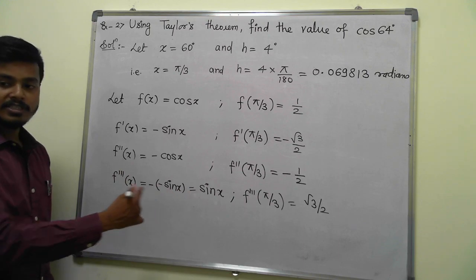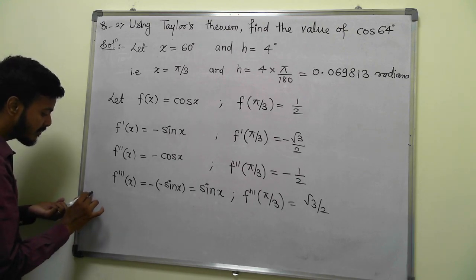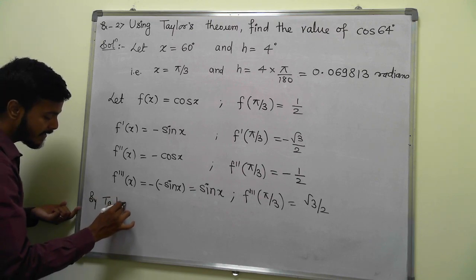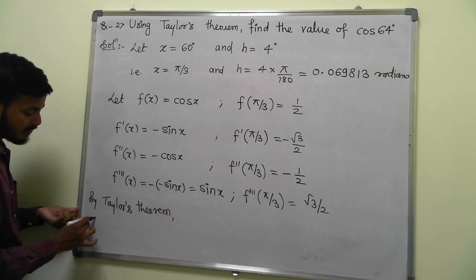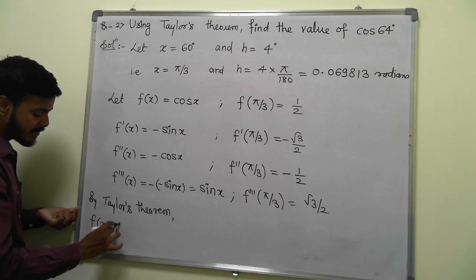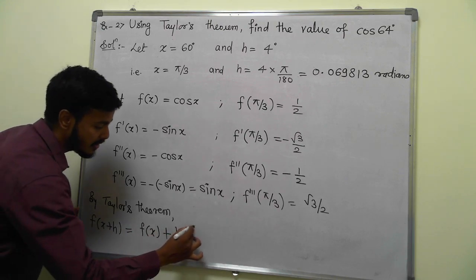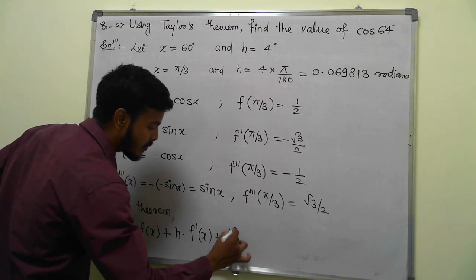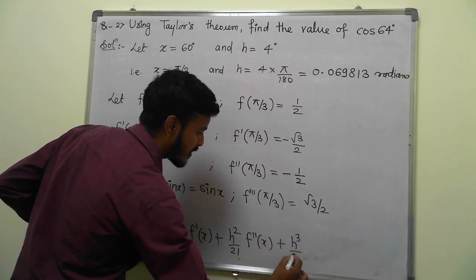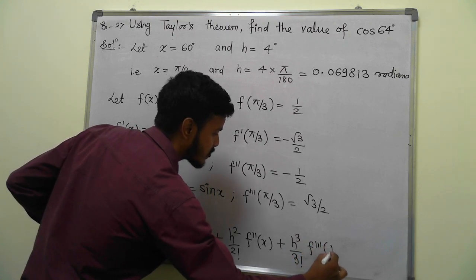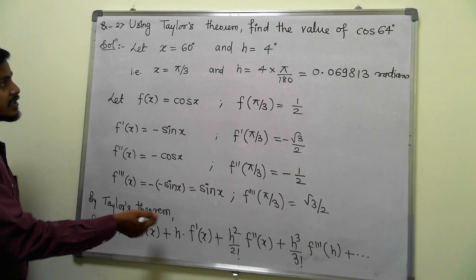Now write down the Taylor series and substitute those values. By Taylor's theorem: f(x + h) = f(x) + h·f'(x) + (h²/2!)·f''(x) + (h³/3!)·f'''(x) + and so on. Now substitute these values.